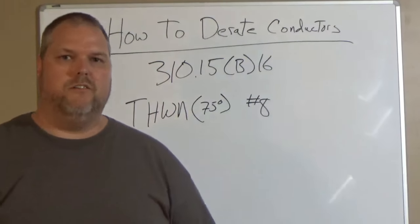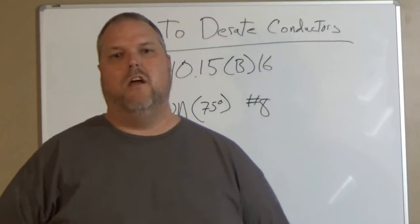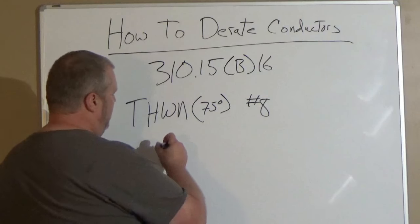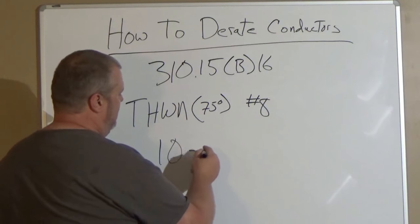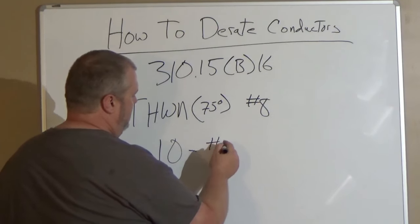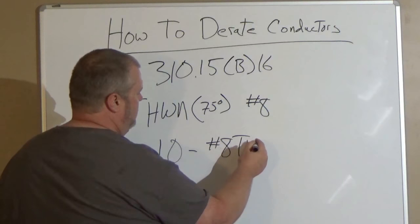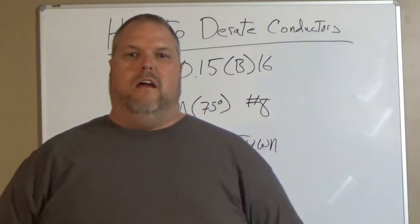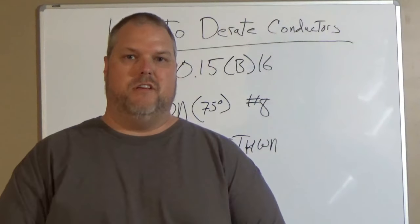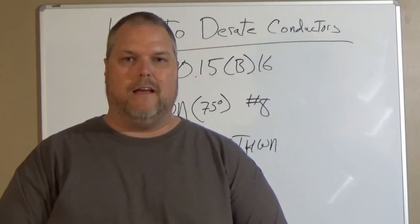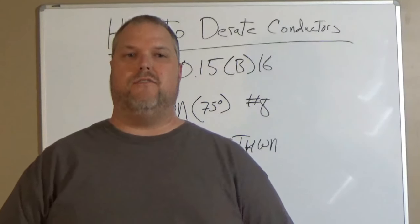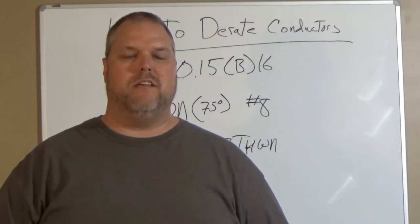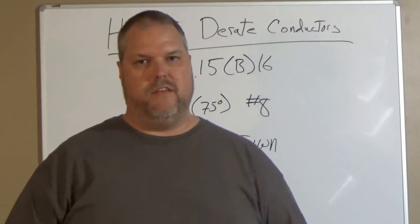Let's stay with the same conductors. What we're going to do is now we're going to put it in a conduit because now there's 10 number 8 THWN. If I have now 10 conductors in that, when I go back and I look at 310.15.B.3.A, that's going to tell me that now I have to take it at 50 percent.